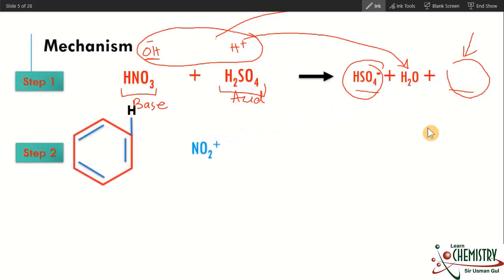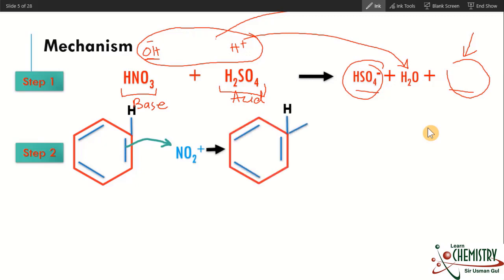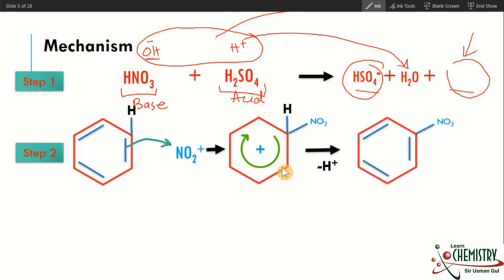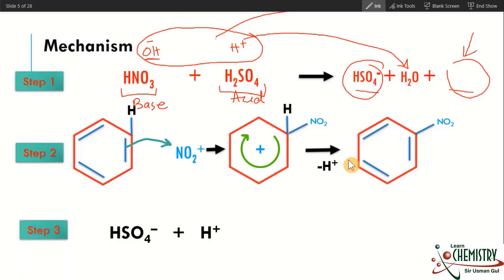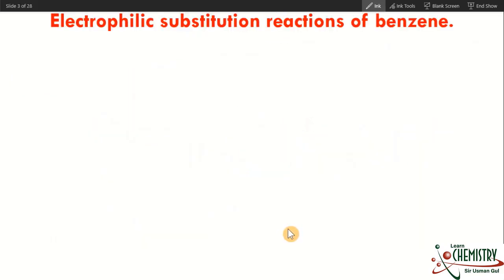When H+ and OH minus combine, they form water. In the second step, NO2 plus reacts with benzene; benzene attacks with one of its pi bonds, forming a benzene cation. The positive charge gets delocalized in the ring. Then benzene loses an H+ ion, maintaining its aromatic core, and we get nitrobenzene as the final product. The H+ ion reacts with HSO4 minus to recover the sulfuric acid catalyst.